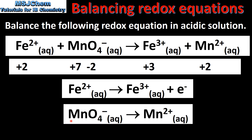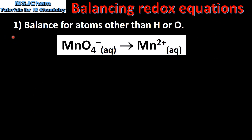That leaves us with a half equation for the reduction of the MnO₄⁻ ion to form the Mn²⁺ ion, which we'll look at next. The first step in balancing this half equation is to balance for atoms other than hydrogen or oxygen. We can see that we have 1 Mn on the left and 1 Mn on the right, so we are balanced for atoms other than hydrogen or oxygen.